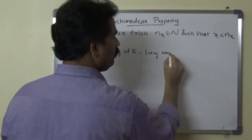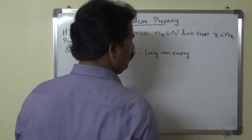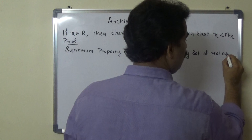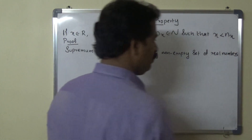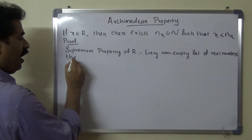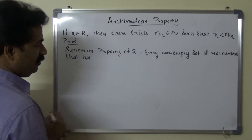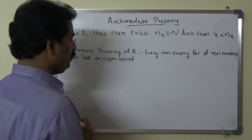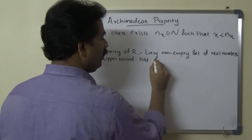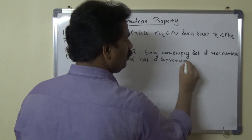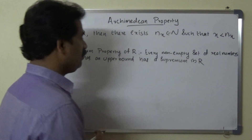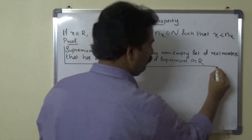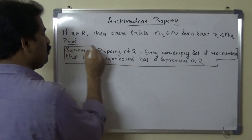The supremum property of R states: every non-empty set of real numbers that has an upper bound has a supremum in R.